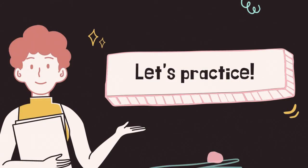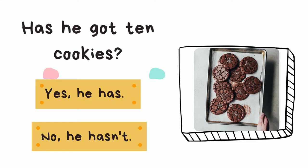Let's practice. Look at the pictures and the questions here. Has he got ten cookies? Let's count the cookies. One, two, three, four, five, six, seven, eight, nine, ten. Yes, he has. He has got ten cookies.